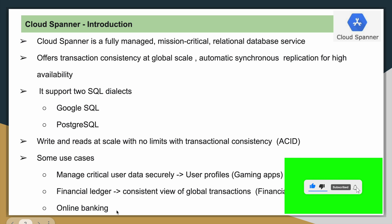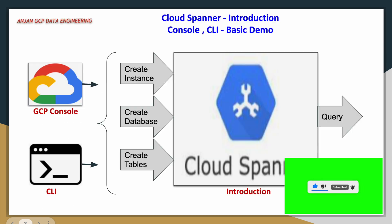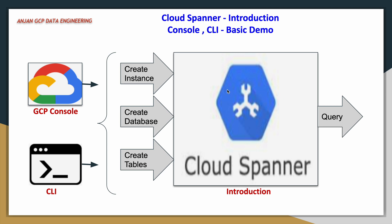Now we will quickly move to the demo. It is an introductory demo where we will create a Cloud Spanner instance, create a database, create a few tables, insert data into the tables, and query the tables. We will do this with two different options: using the Google Cloud console and also the command line interface.